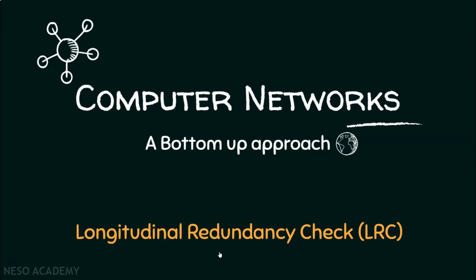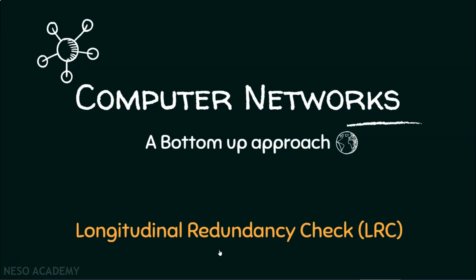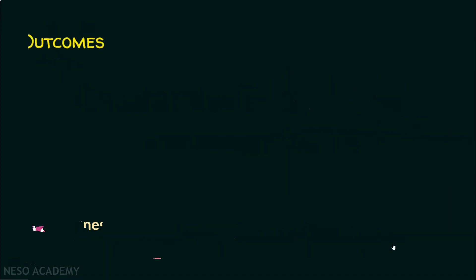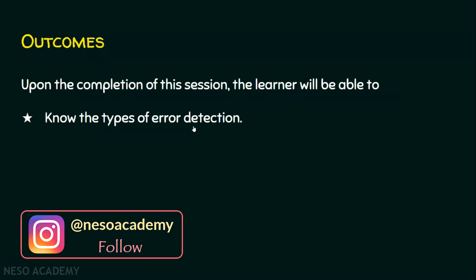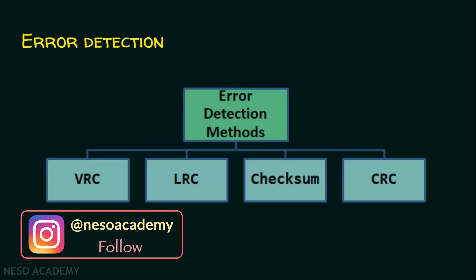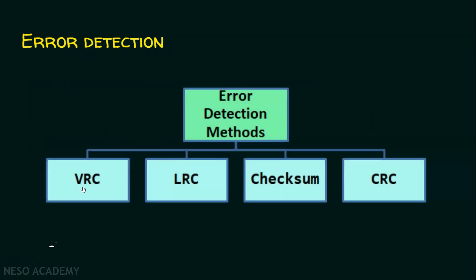In the previous lecture, we have seen the vertical redundancy check, that is the VRC. In today's lecture, we will see the longitudinal redundancy check, simply LRC. In today's session, we are going to know the types of error detection and will be mainly understanding LRC and its performance. We have basically four error detection methods: VRC, LRC, the checksum, and finally the cyclic redundancy check. In today's session, we are going to mainly focus on LRC.